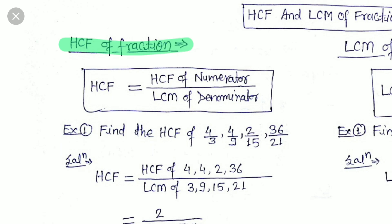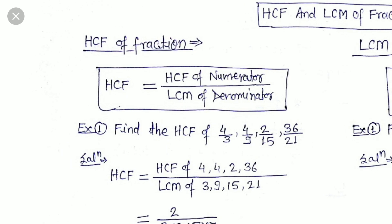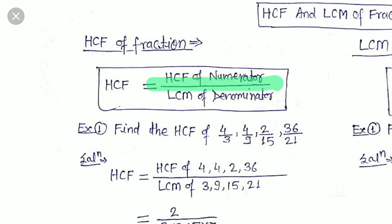This video is beneficial for the SUPERTET examination part 2. Highest common factor of fractions is simply calculated as the HCF of numerators divided by LCM of denominators, that is least common multiple.